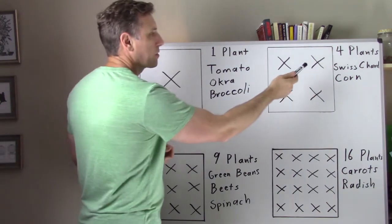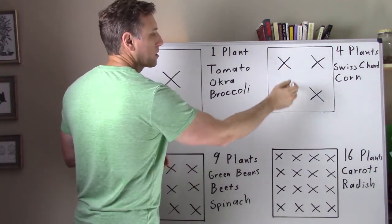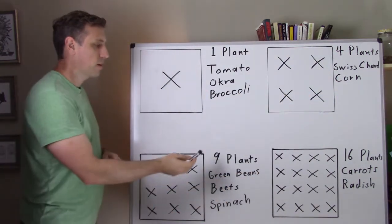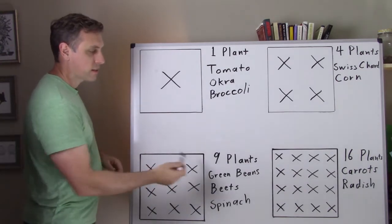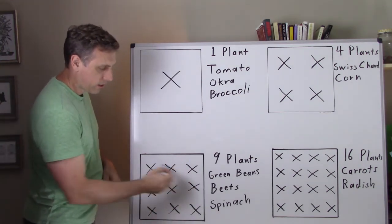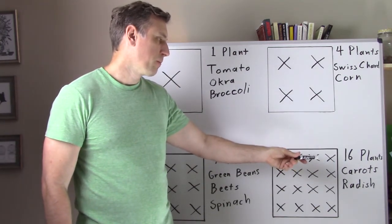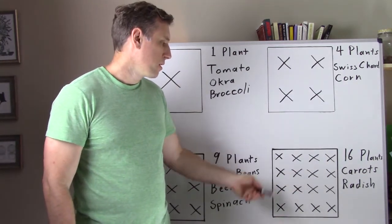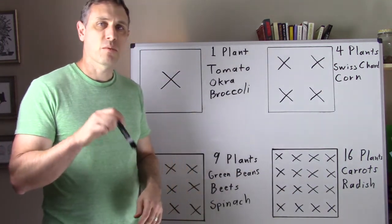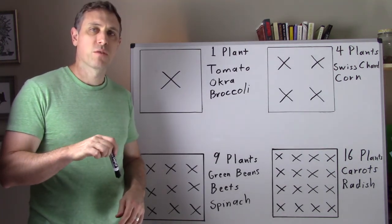And the next one we have is four plants per square foot. Examples are Swiss chard and corn, so you equally distance four plants within that one square foot. Next we have nine plants per square foot and the examples of that would be green beans, beets, and spinach. So equally distance nine plants within the square foot and then finally we have 16 plants per square foot. Examples of that are carrots and radishes, just equally distance within that square foot. So go ahead and put a list of the plants and how many plants you can put for each square foot in the description below if you want to check that out.